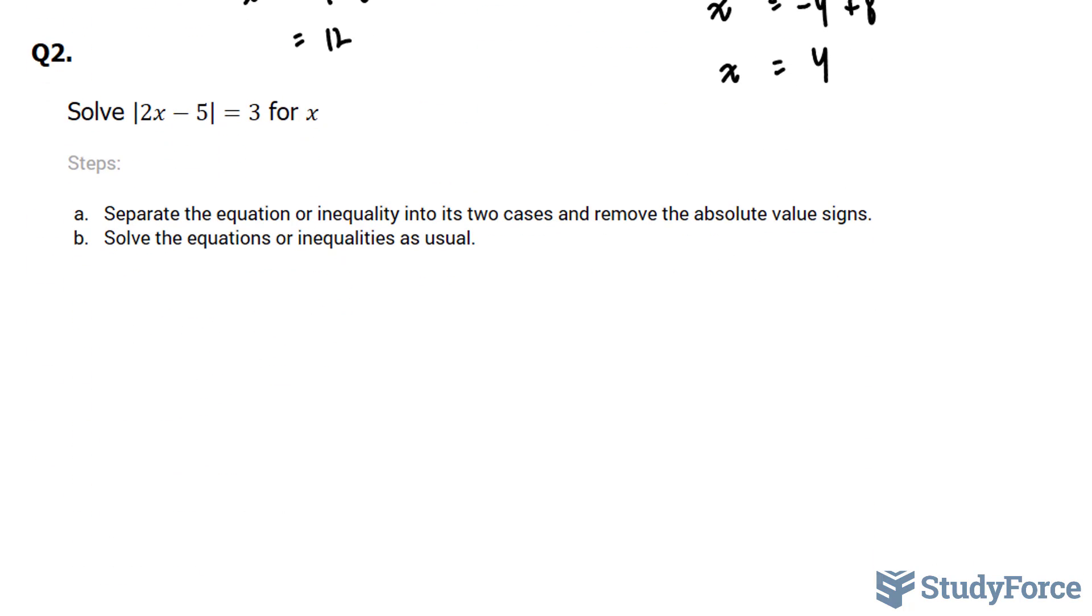Let's move on to question number two. In question number two, they're expecting us to solve the absolute of 2x minus 5 is equal to 3. Now, once again, we'll follow these two steps. We'll have a positive case, and we'll have a negative case.